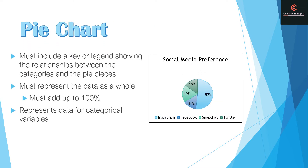Let's start off by looking at a pie chart. A pie chart must include a key or a legend showing the relationships between the categories and the pie pieces. A pie chart must represent the data as a whole and must add up to a hundred percent. It is used to represent data for categorical variables.